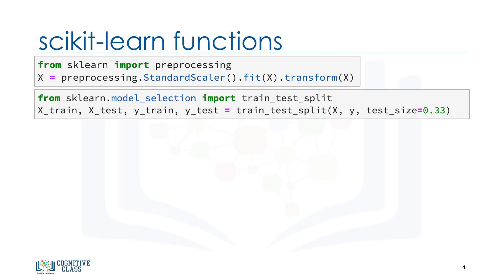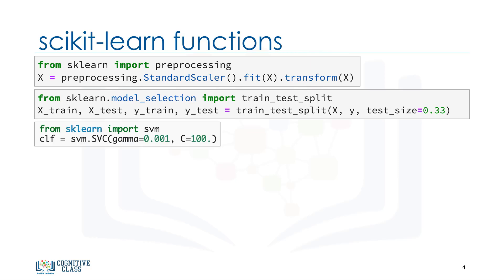You have to split your dataset into train and test sets to train your model, and then test the model's accuracy separately. Scikit-learn can split arrays or matrices into random train and test subsets for you in one line of code. Then you can set up your algorithm.